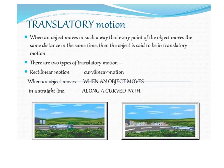The first type is translatory motion. Translatory motion is that motion when an object moves in such a way that every point of the object moves the same distance in the same time. This can be motion along a straight line, that is rectilinear motion, or when an object moves along a curved path, that is curvilinear motion.